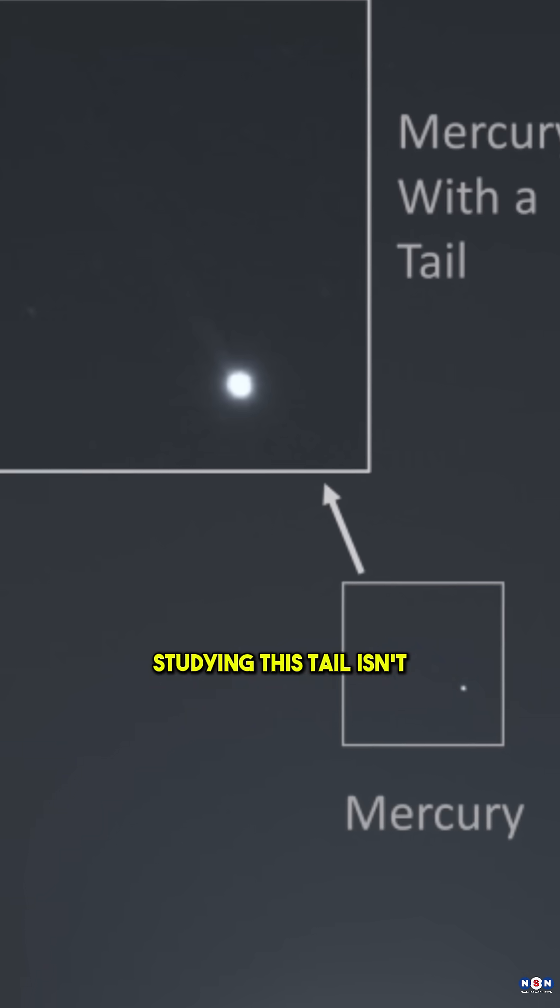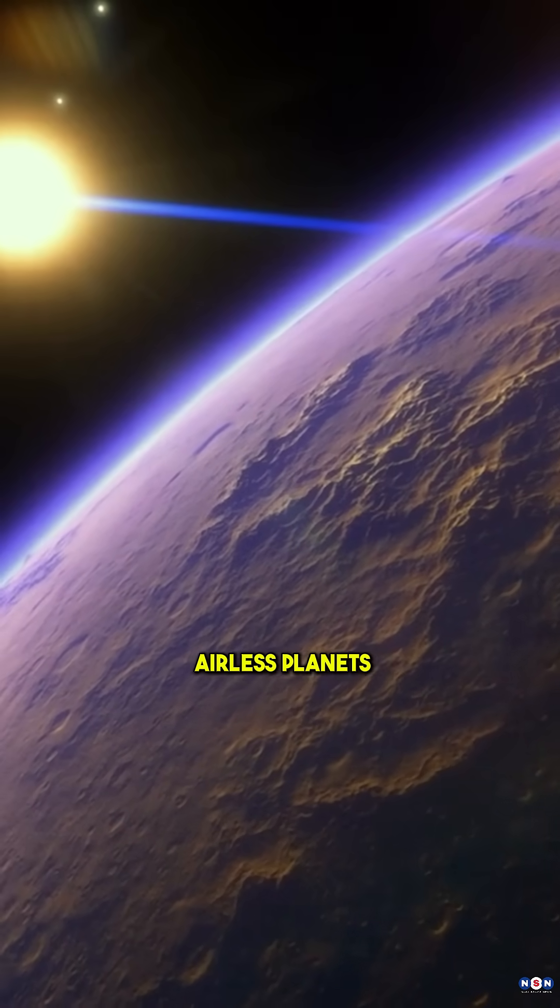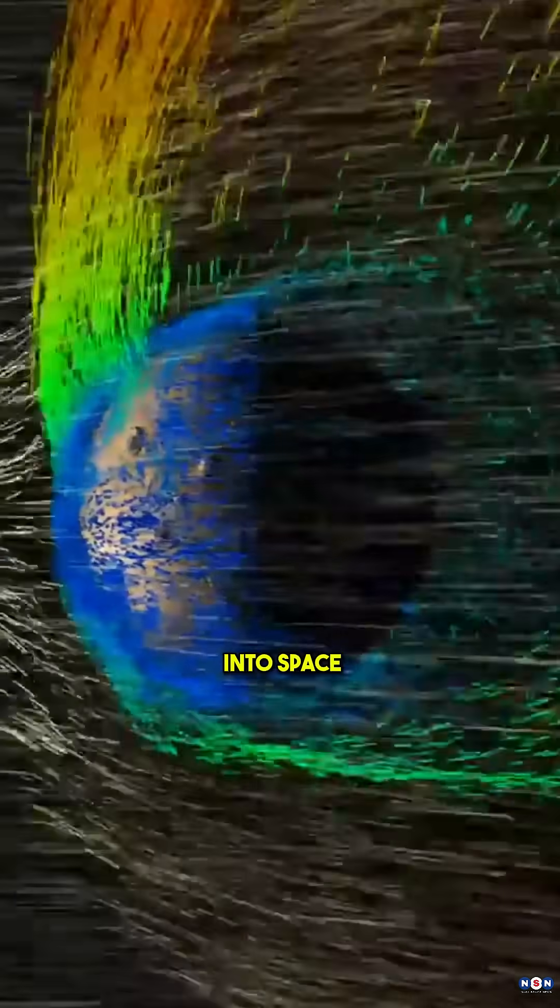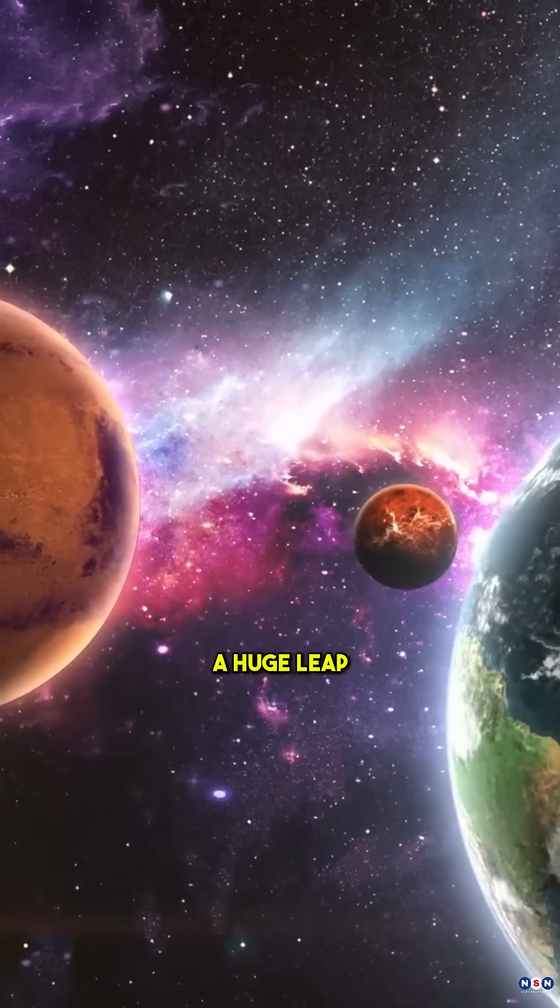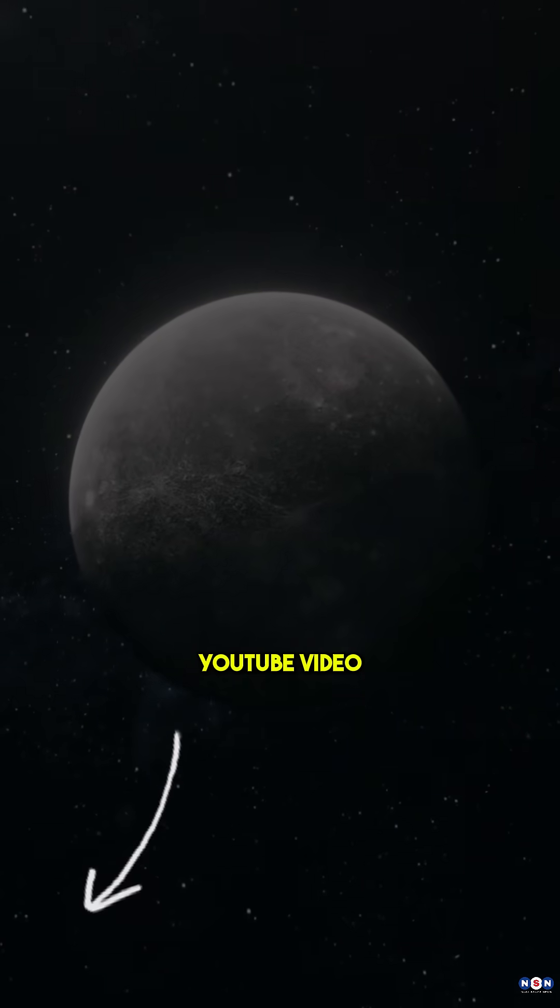And here's the kicker: studying this tail isn't just about Mercury. It helps scientists understand how airless planets, moons, and even some exoplanets lose material into space. This discovery is a huge leap forward in planetary science. To learn more about this topic, watch our full YouTube video.